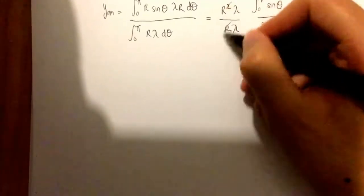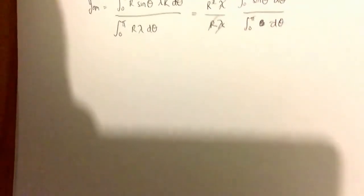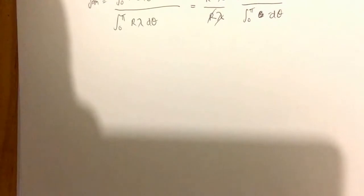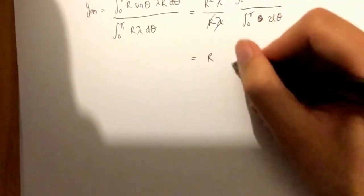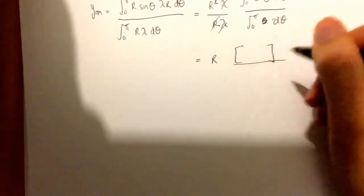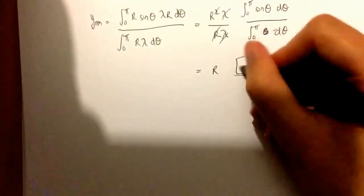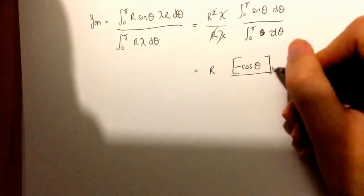So now we can see, okay, they're obviously going to cancel down, so we're just going to get r, which is good because it means we're expressing our centre of mass in y in terms of r, the radius. So we end up with r. And when we integrate sine theta, we're going to get negative cosine theta,